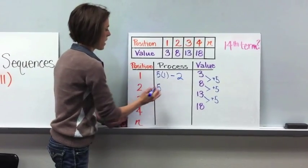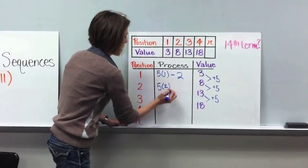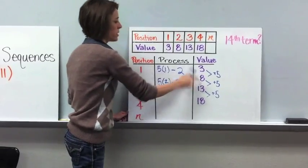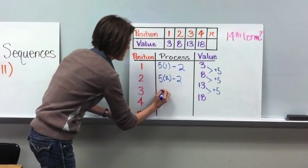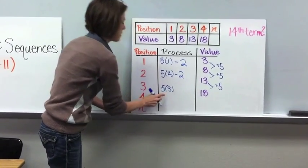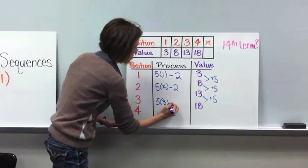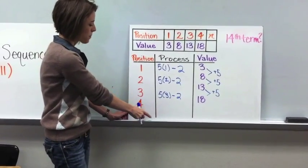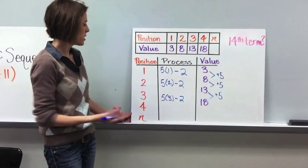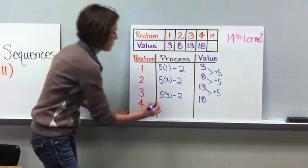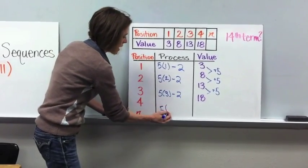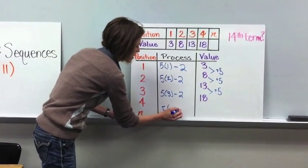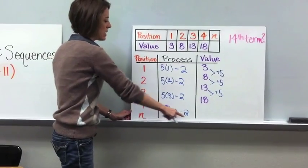So we take our common difference, which is 5, and multiply it by the term number, which is 2. 5 times 2 is 10, and then 10 minus 2 gives us 8. So that works. Same thing for 3: 5 times 3 is 15, and 15 minus 2 is 13. So when we look at our process, we can come up with an expression to find any term in the sequence. The 5 stays the same, we multiply it by n — which is our position or term number — and we subtract 2 from that, giving us any number in our sequence.